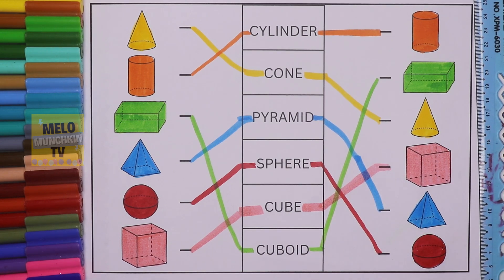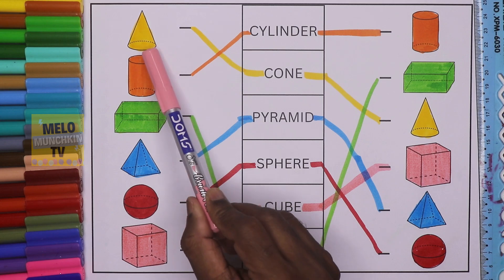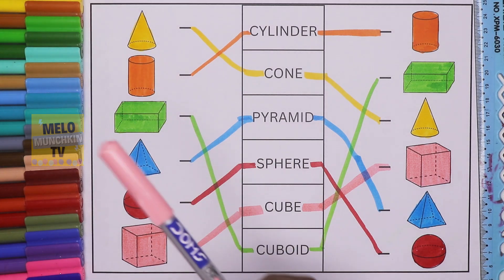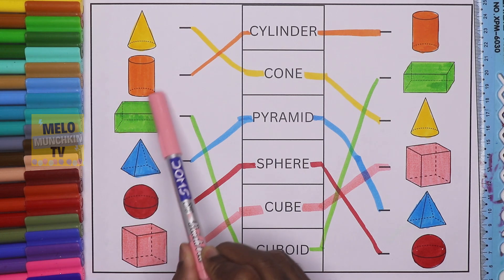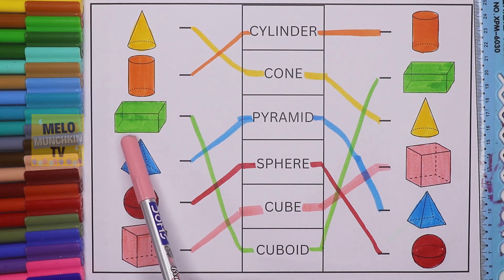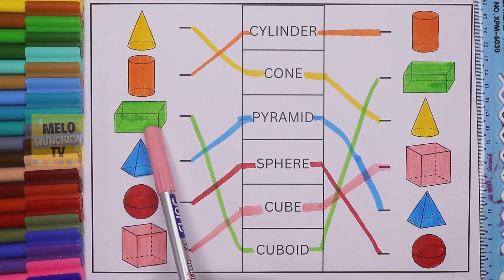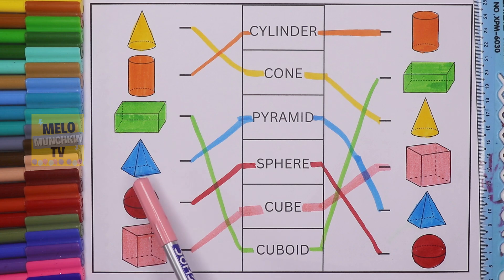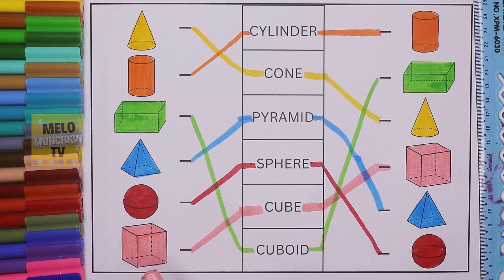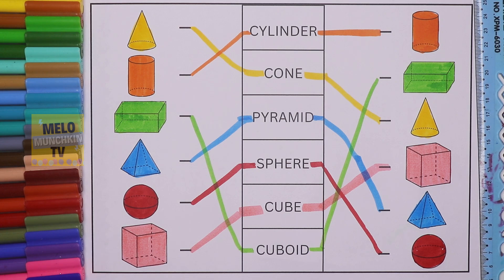So we have joined all the 3D shapes. Let's recall: the first one is cone, in yellow color. The second one is cylinder, in orange color. The third one is cuboid, in green color. The fourth one is pyramid, in blue color. The fifth one is sphere, in red color. And the sixth one is cube, in light pink color. I hope you have understood and learned something from this video. If you like it, don't forget to hit the thumbs up and share with your friends. See you in my next video — till then take care and bye!